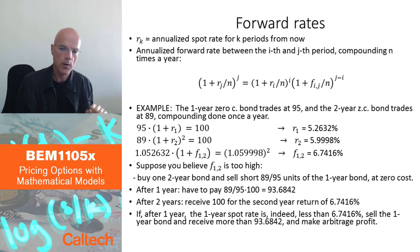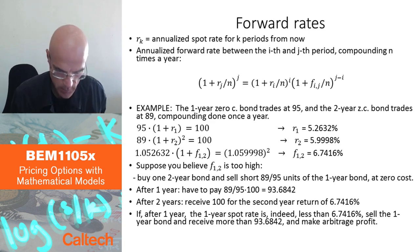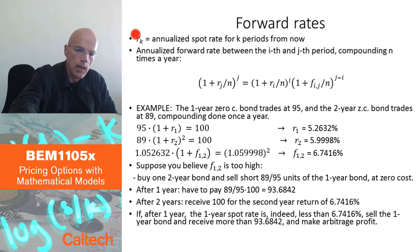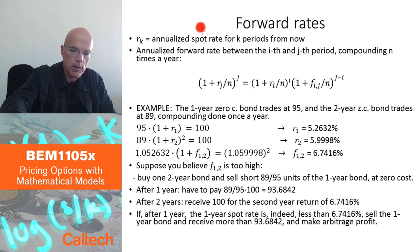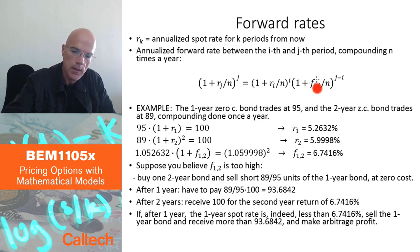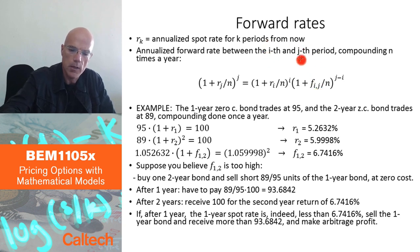More formally, let's look at the definitions. Let R_K be the annualized spot rate for K periods from now. I want to define a forward rate which is going to be denoted F_IJ — this is the notation for the forward rate between the I-th and the J-th period from now, where J is larger than I. Let's say I'm compounding N times a year.